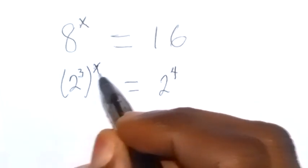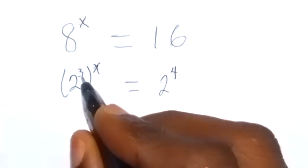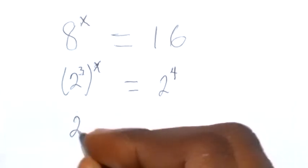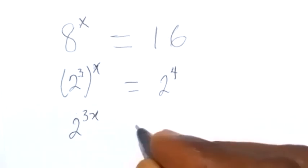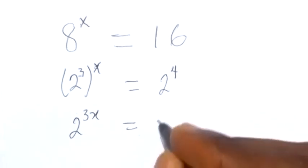And when we apply the law of indices here, 3 can multiply x here. So this will now be 2 raised to power 3x, then equals to 2 raised to power 4.